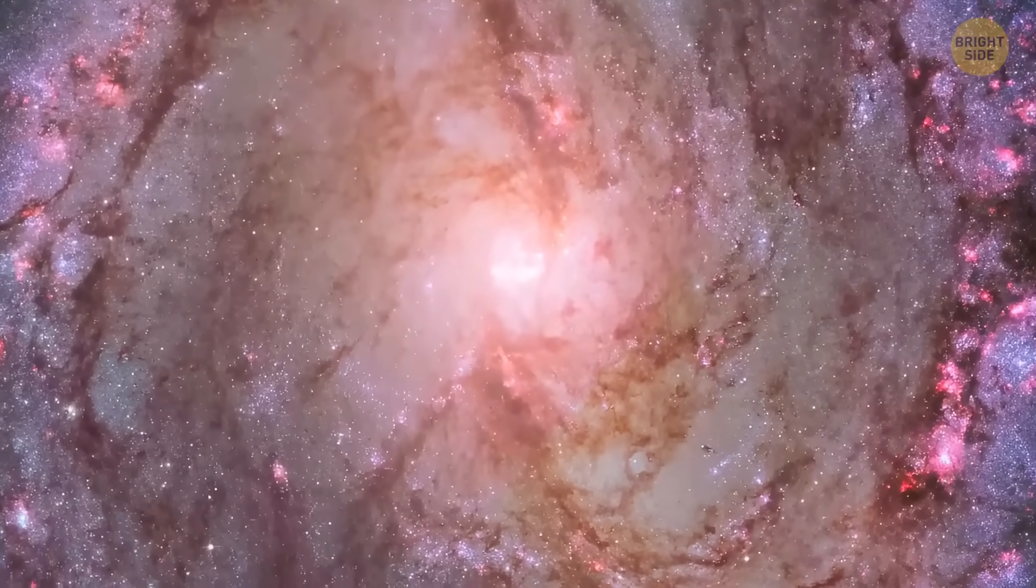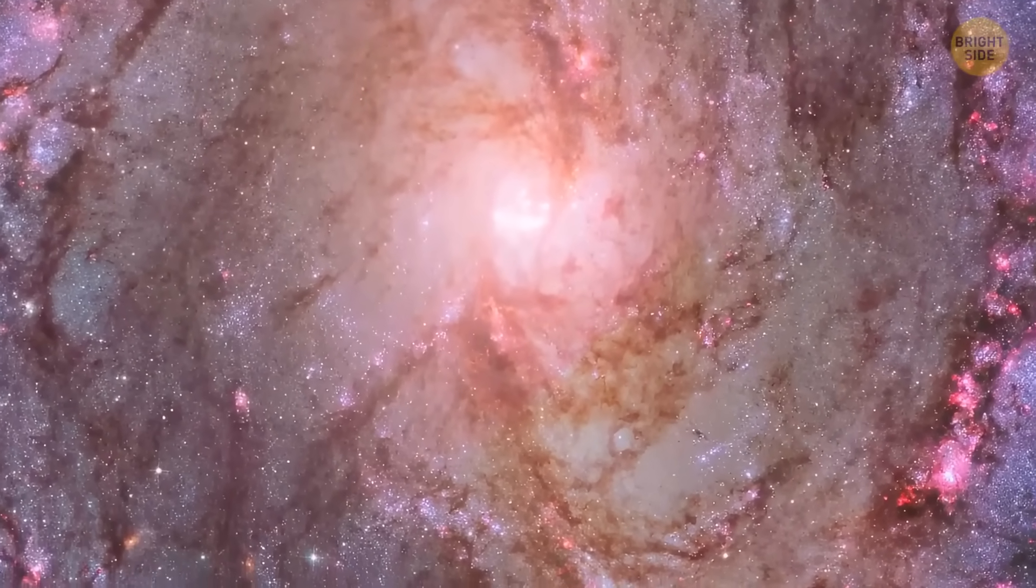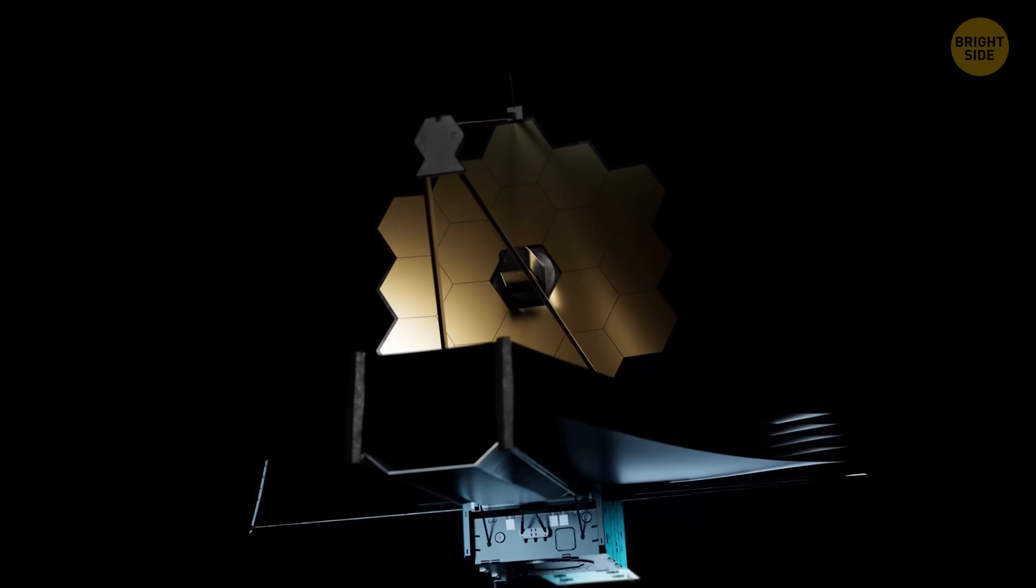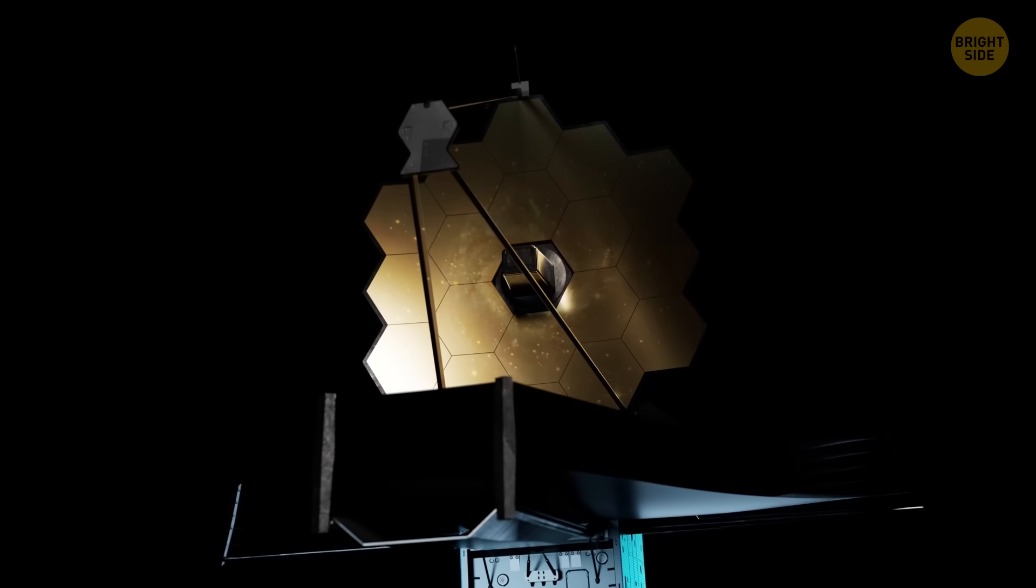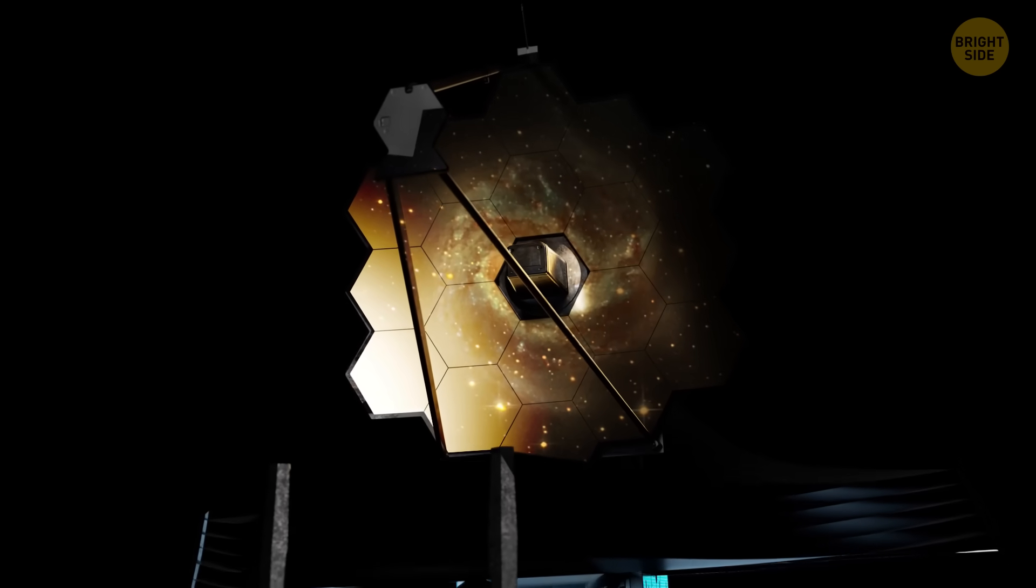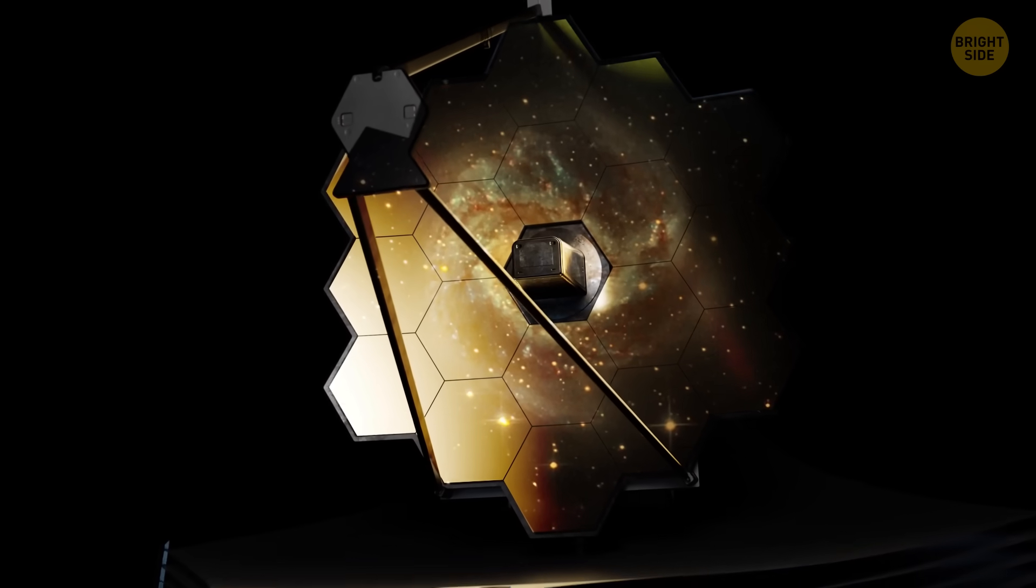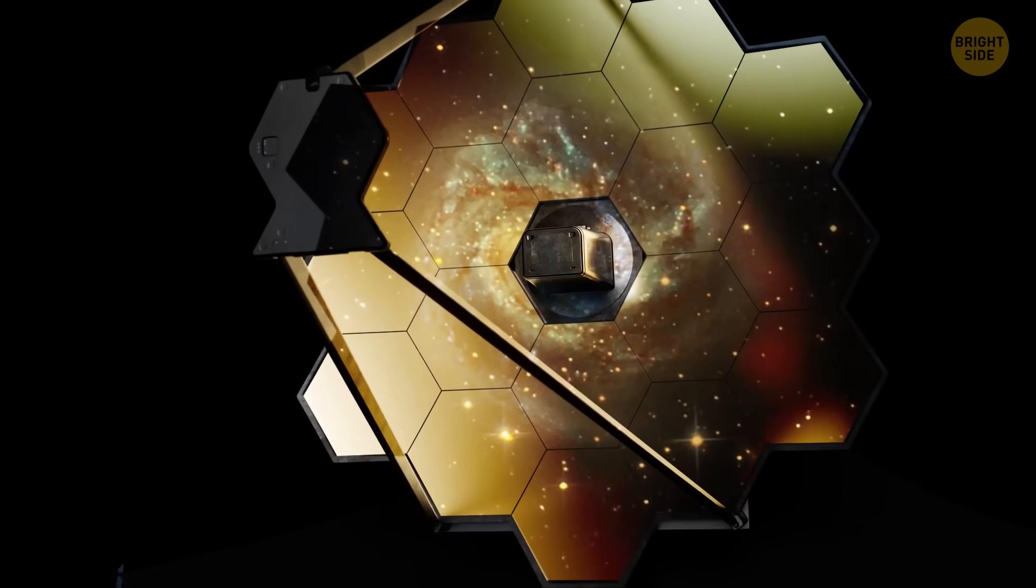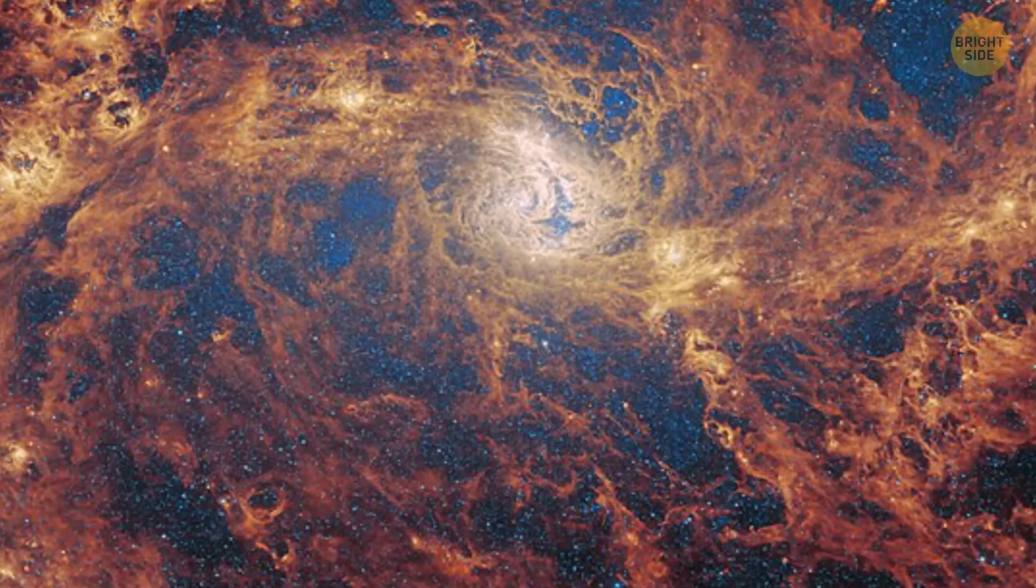Still, researchers were sure it would be there. That was super confusing. And now, the super-powerful James Webb Space Telescope might have found a clue that there really is a supermassive black hole hiding in the middle of M83.